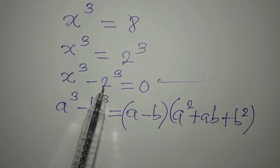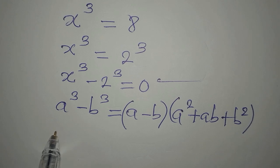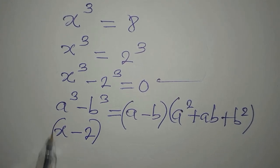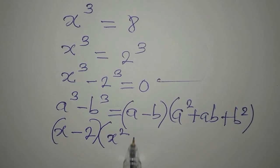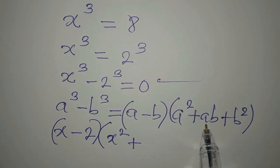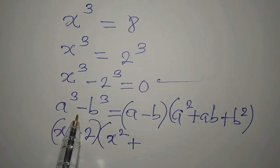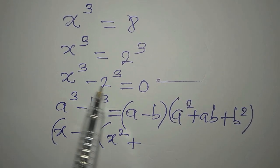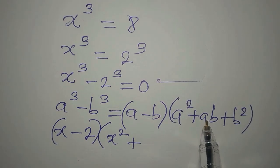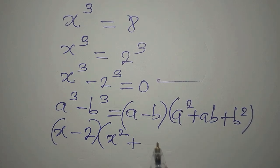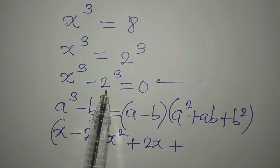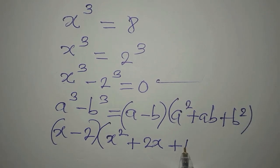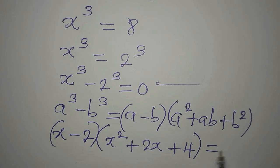According to this equation, our a is x and our b is 2. So in place of (a minus b) we write (x minus 2). Then in place of a squared we write x squared; plus ab, which means a times b — our b is just 2, so it's x times 2, which is 2x; plus b squared, which is 2 squared, giving 4. Everything equals 0.